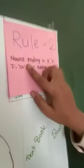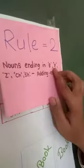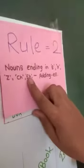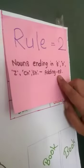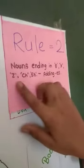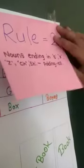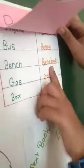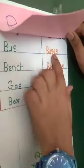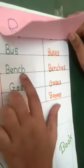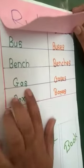Second rule is, nouns ending in S, X, Z, CH, or SH add ES. This means the noun that ends by S, X, Z, CH, or SH, we should add ES to that. For example: bus becomes buses, bench becomes benches, gas becomes gasses, box becomes boxes. The bus ends by S, so E-S. Bench ends by H, gas ends by S, and box ends by X.